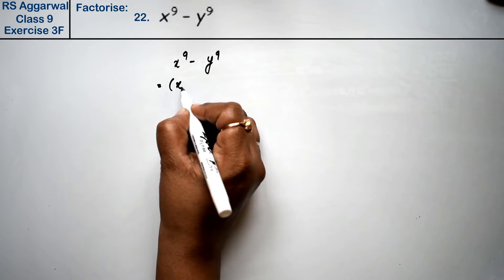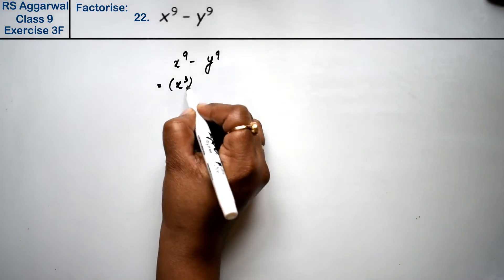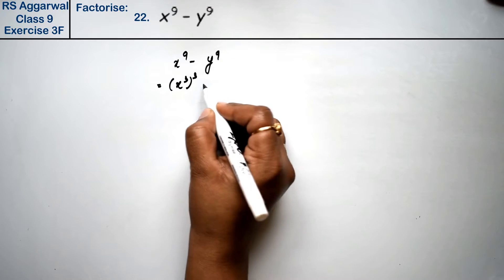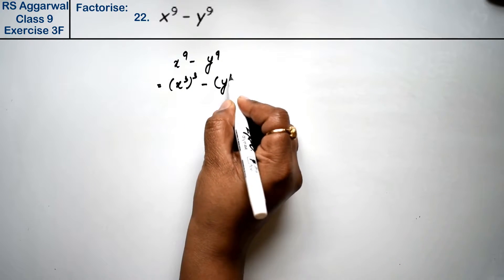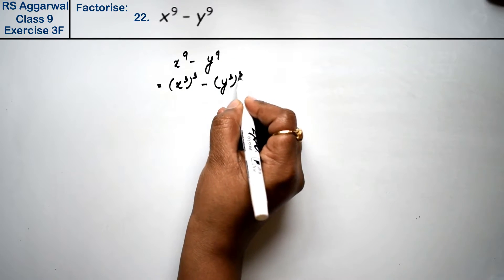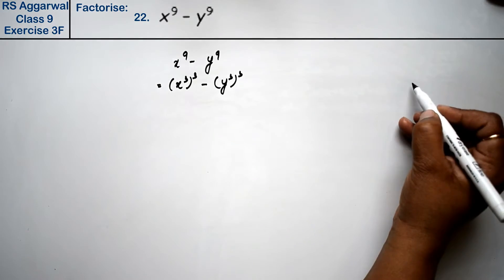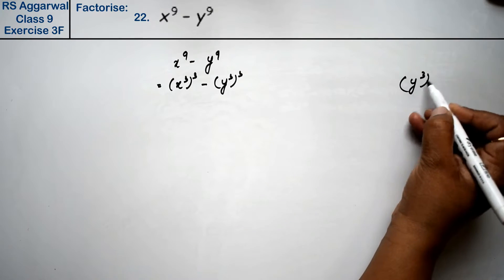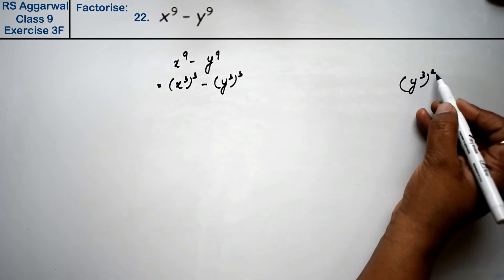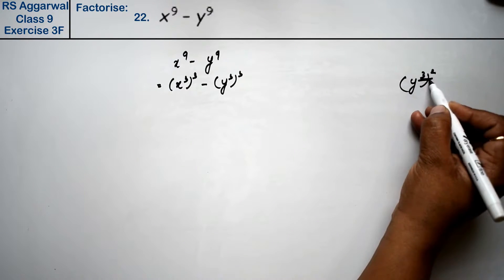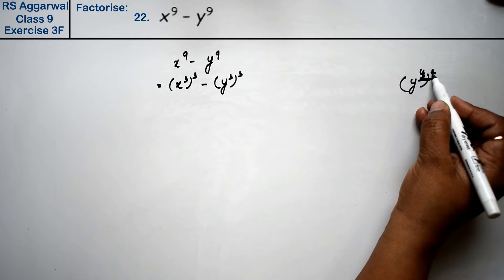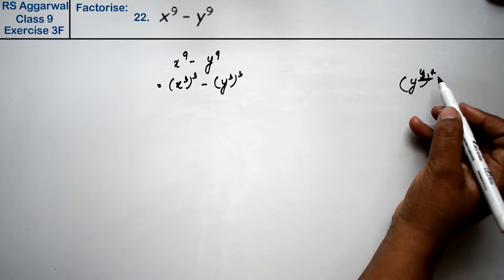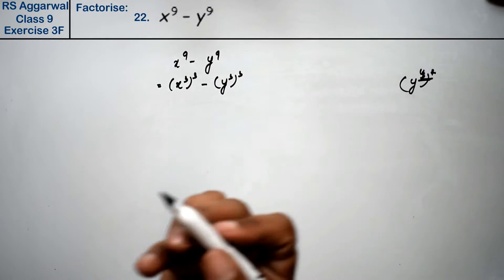What we can write is x cube whole cube minus y cube whole cube. Because if y has the power of 3 squared, then the power becomes 6. If 4 is the power, then 8 is the power. So this is the cube form.